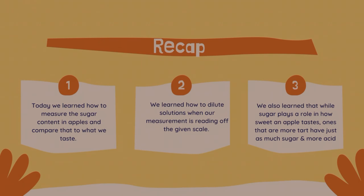To summarize, we learned how to measure concentrations of solutions, in this case, focusing on sugar in apples. Our apples had so much sugar, their juice was reading off the scale. So we learned how to dilute the juice with water to ensure our measurements were accurate. We also learned that sugar isn't the only thing that determines how sweet an apple is. The amount of acid in the apple tells us how tart it will be.